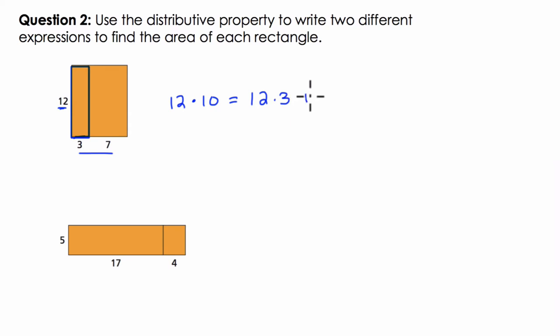And then adding in the other rectangle, which is a 12 by 7 rectangle, 12 tall and 7 wide. So these two expressions are equal. You could also say it's the same thing as 12 times (3 plus 7), because 3 plus 7 is 10.